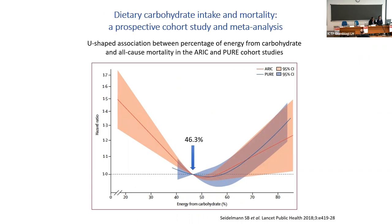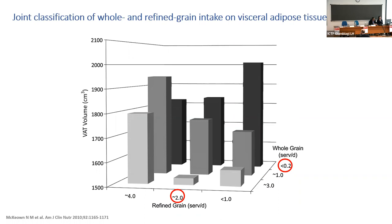There is evidence that carbohydrate intake should be maintained. Two independent studies conducted at Harvard in males and females demonstrated that roughly 50% carbohydrate intake is associated with the lowest mortality rate. Another well-performed study demonstrated that the highest visceral adipose tissue accumulation was associated with consuming less than 0.2 servings per day of whole grain and less than one serving per day of refined grain. Therefore, eating low-carb is associated with the highest intra-abdominal fat accumulation.